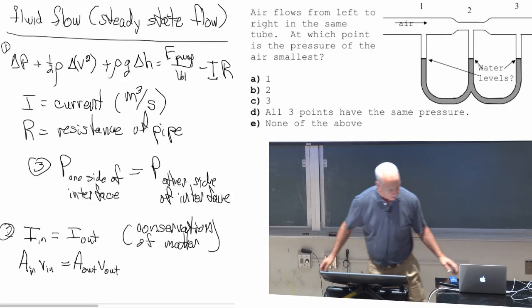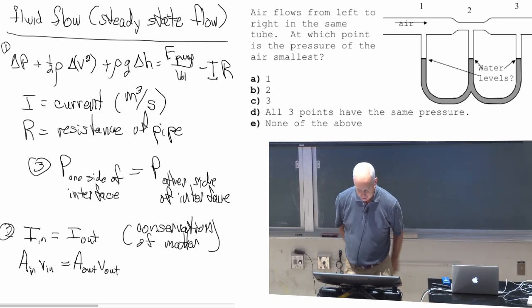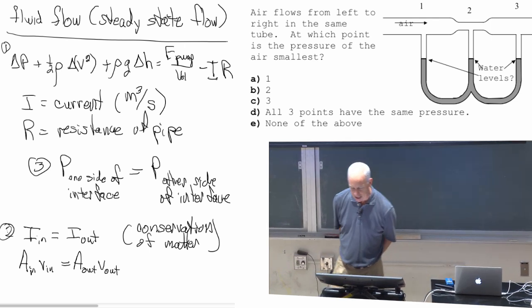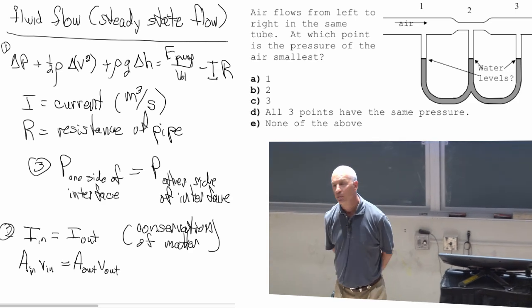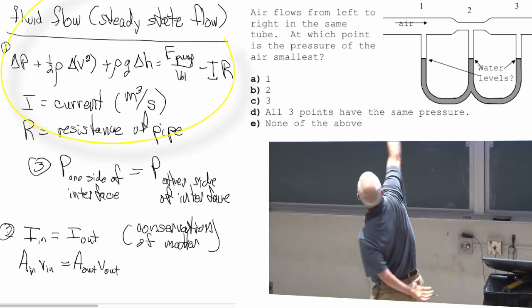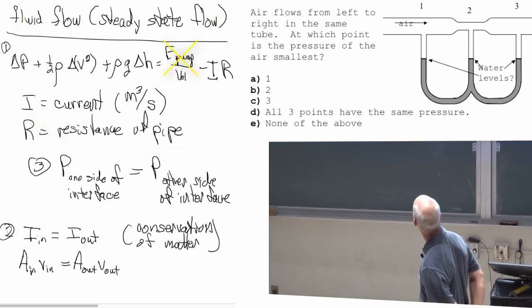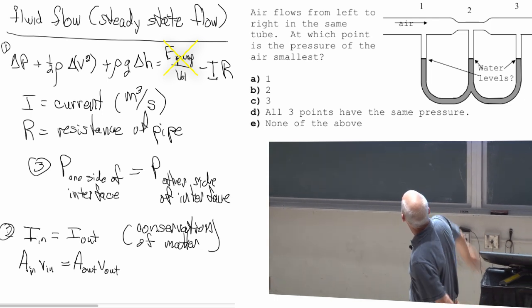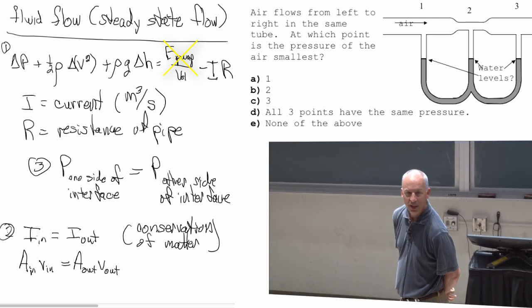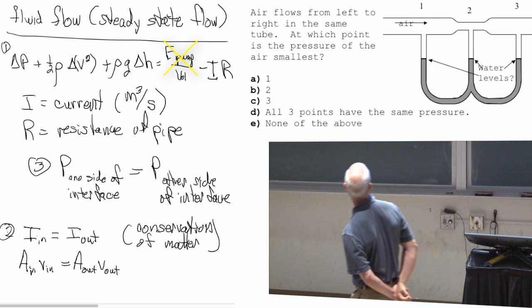Air flows from left to right. At which point is the pressure of the air the smallest? So you'll have to use that. There's no pump. You'll have to think about, well there is a current. Air is flowing to the right.